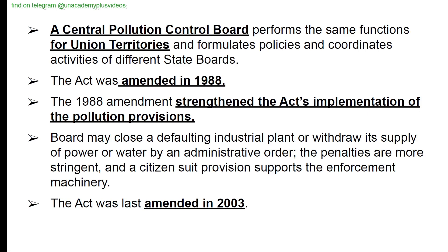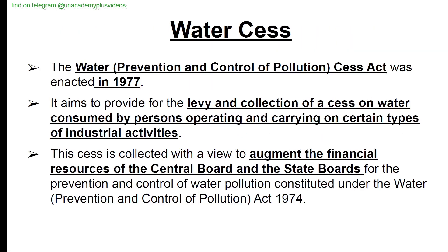Water Cess Act, 1977: The Water Prevention and Control of Pollution (Cess) Act was enacted in 1977. It provides for levying and collection of cess on water consumed by persons operating certain types of industrial activities. This cess is collected to augment the financial resources of the Central Board and State Boards for the prevention and control of water pollution constituted under the Water Prevention and Control of Pollution Act, 1974.